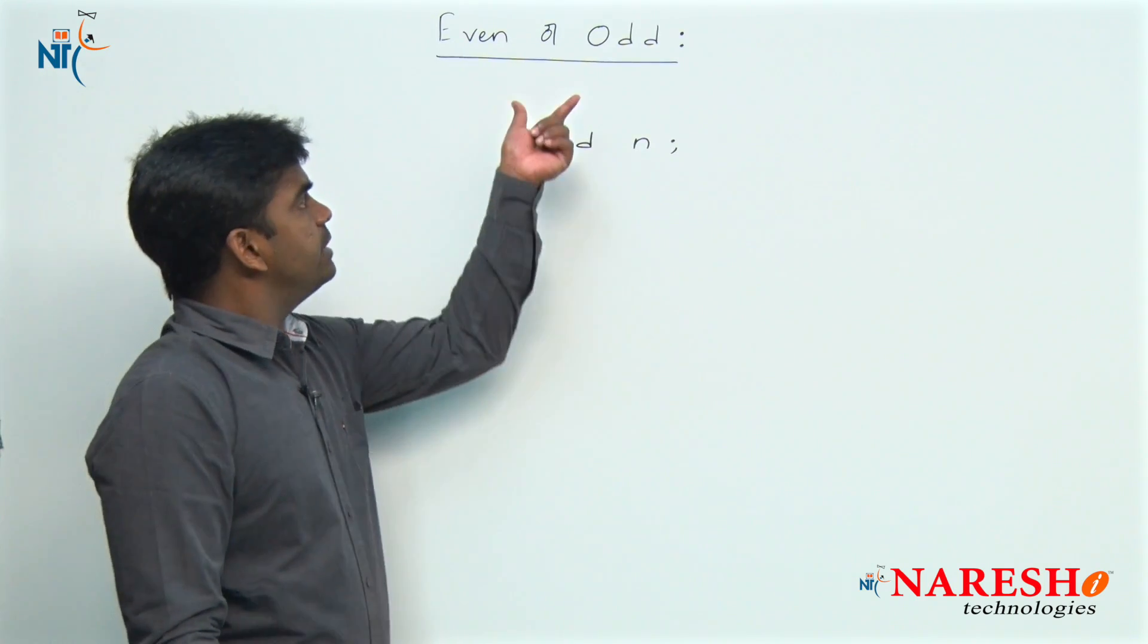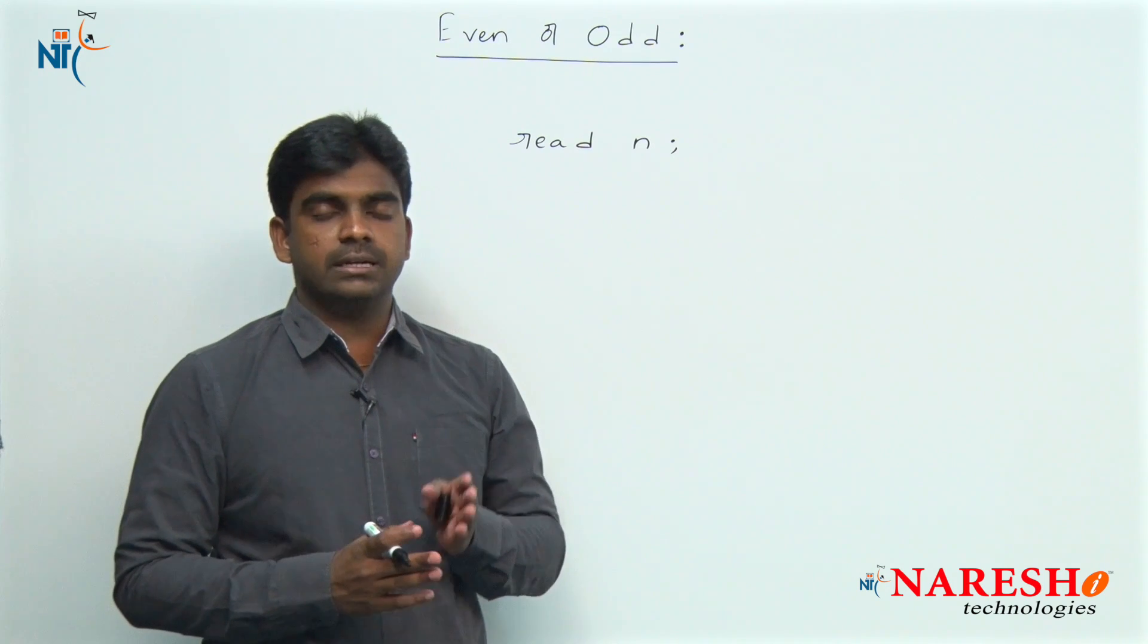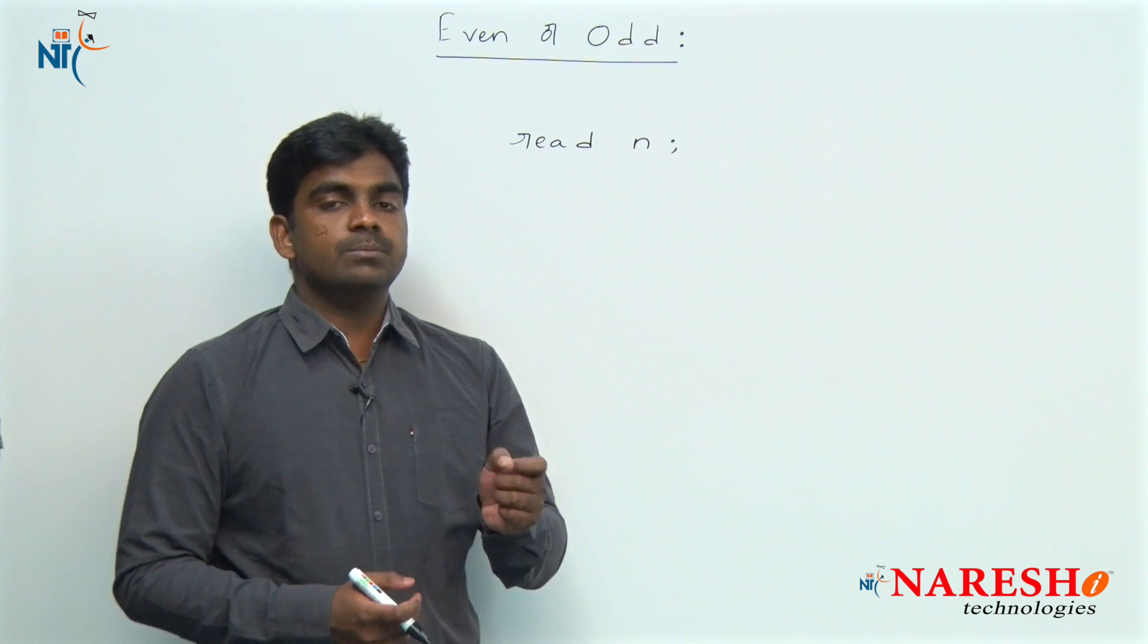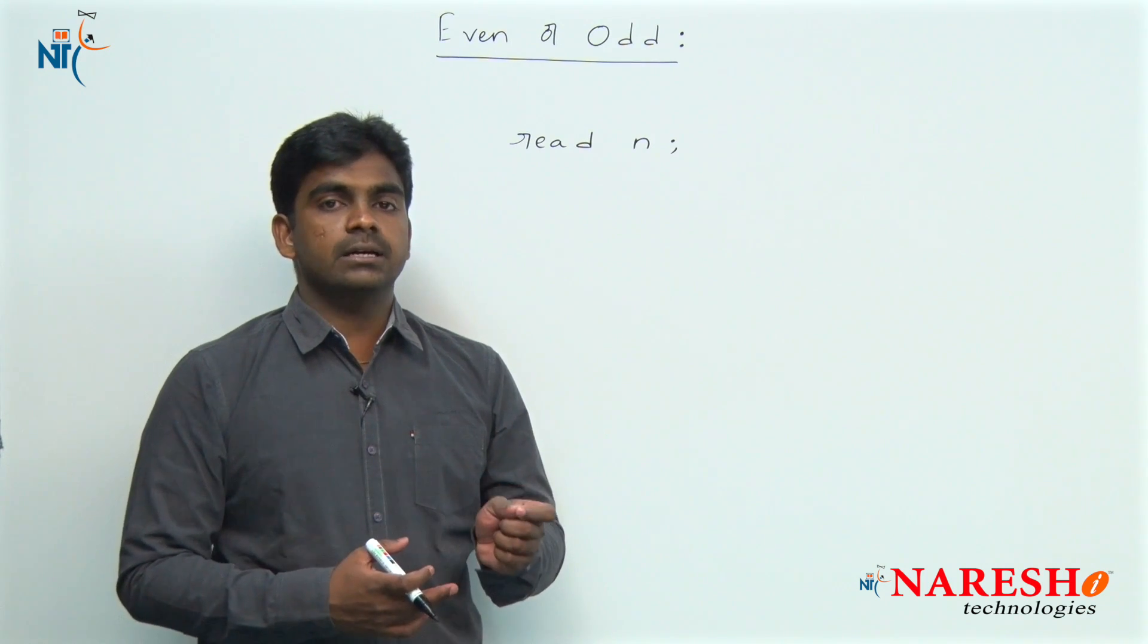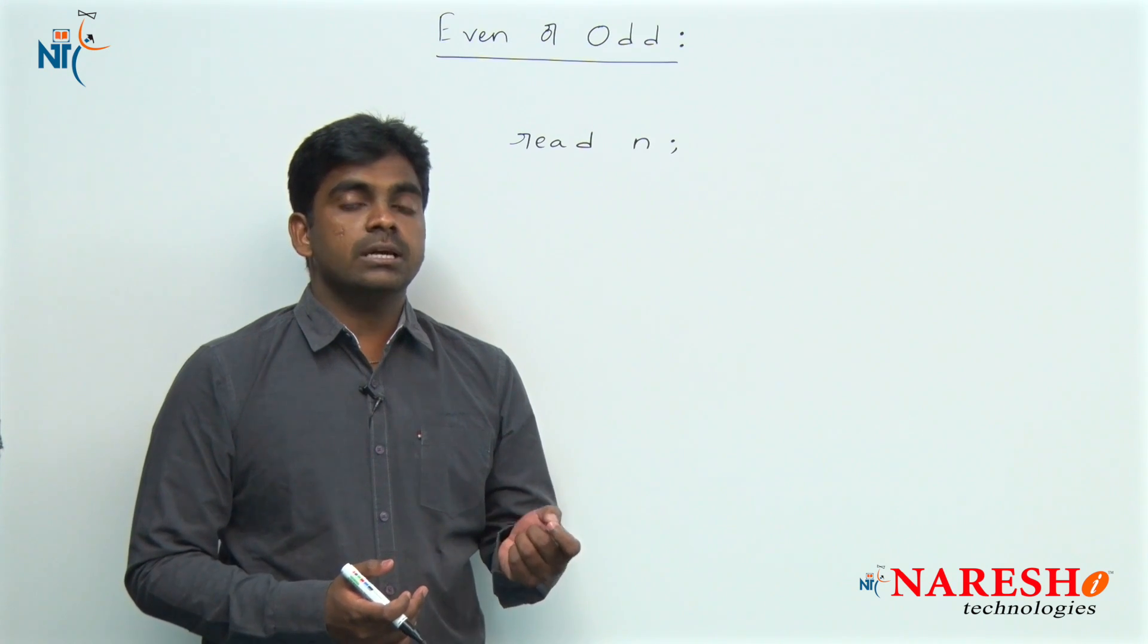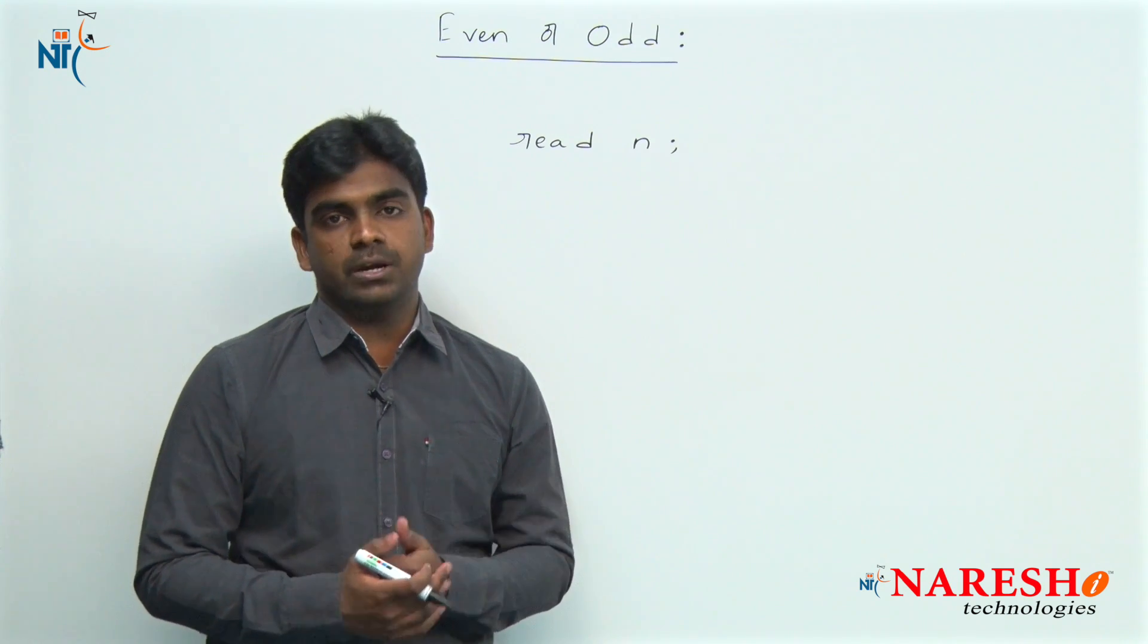What is an even number? A number which is divisible by 2. Divisible by 2 means the remainder should be 0. Here we are using remainder operator, not divided by operator.